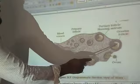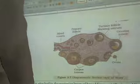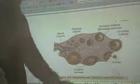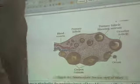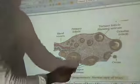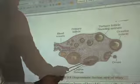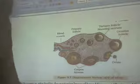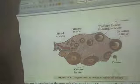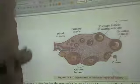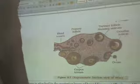Inside the Graafian follicle, we can see the secondary oocyte. By the rupturing of the Graafian follicle and the ovary, the ovum is released. The release of the ovum from the ovary is called ovulation. After release, the remaining parts of the Graafian follicle are converted into the corpus luteum, which produces hormones — progesterone and estrogen. A high amount of progesterone is produced from the corpus luteum.